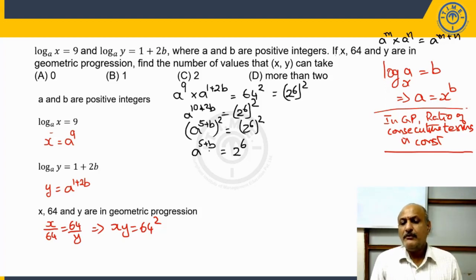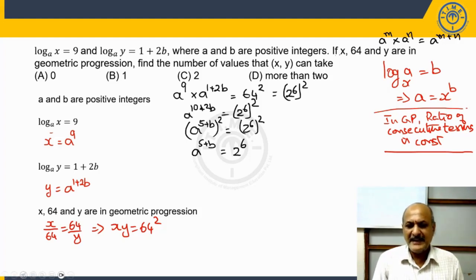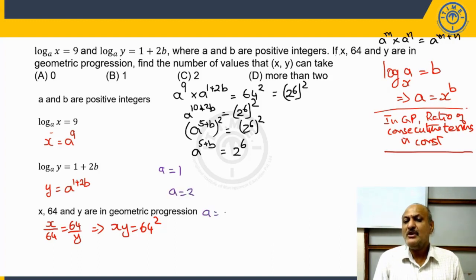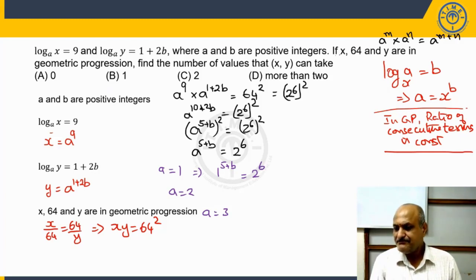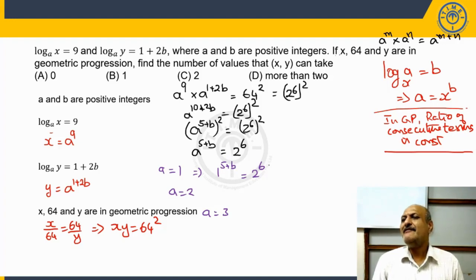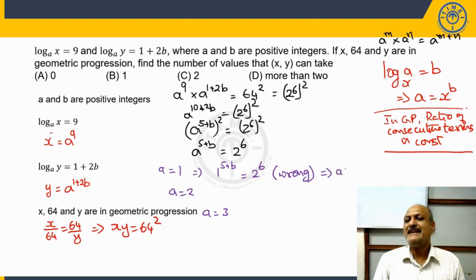Let us guess what values of a and b satisfy this condition. a is a positive integer, so it can take values 1, 2, 3, and so on. If a equals 1: 1 raised to the power of (5 plus b) equals 2 to the power of 6. Since b is a positive integer, (5 plus b) is a positive integer, and 1 raised to any positive integer is always 1. That can never equal 64, so a cannot equal 1.